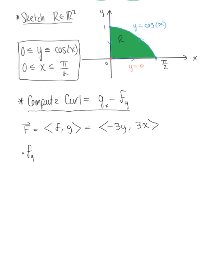We can see the partial derivative of F with respect to Y is minus three. Partial derivative of G with respect to X is positive three. So our curl is equal to three minus the minus three, which leaves us with six.